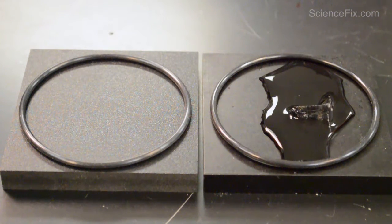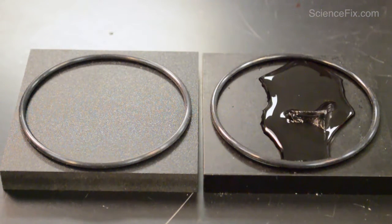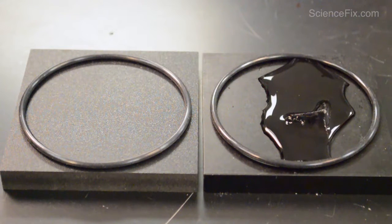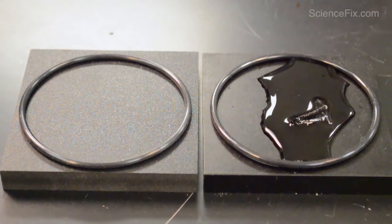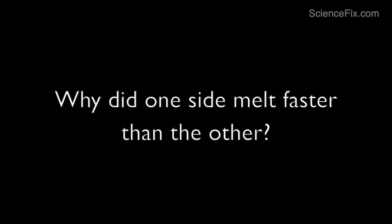So, the ice cube on the right block has melted at a very quick rate, and that leads us to a question: why did one side melt faster than the other?